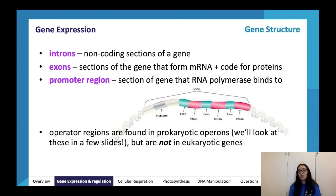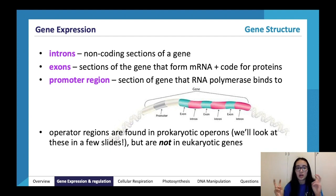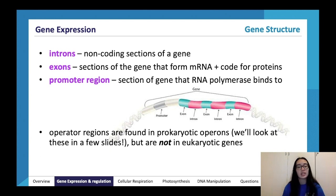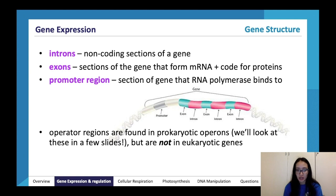Regarding gene structure: introns are non-coding sections of a gene — the interrupting regions. Exons are sections that form mRNA and code for proteins — they are the expressed regions. The promoter region is a section of the gene to which RNA polymerase can bind. Operator regions are found in prokaryotic operons and are not present in eukaryotic genes.